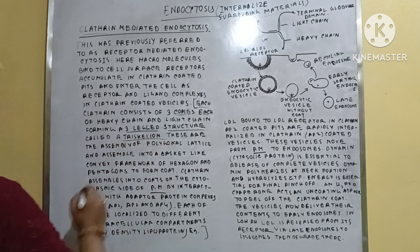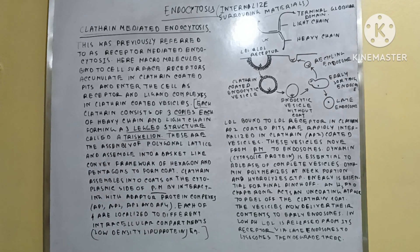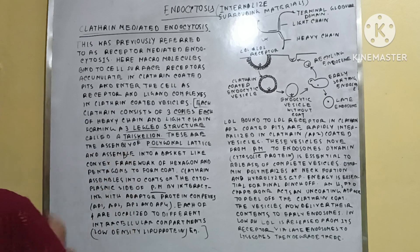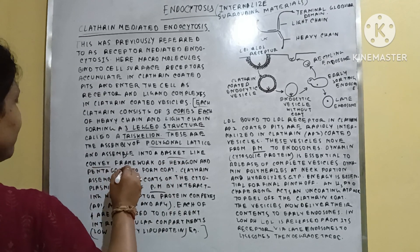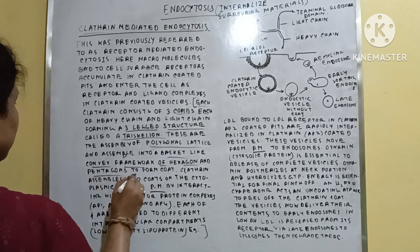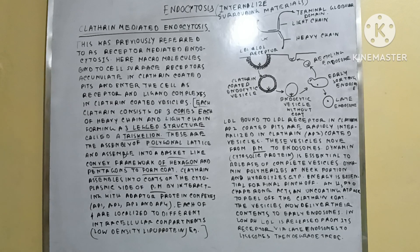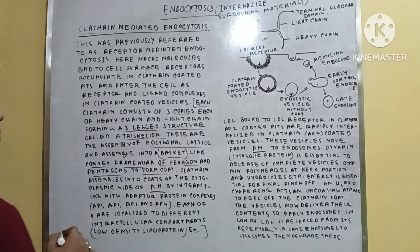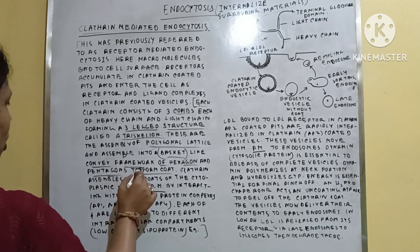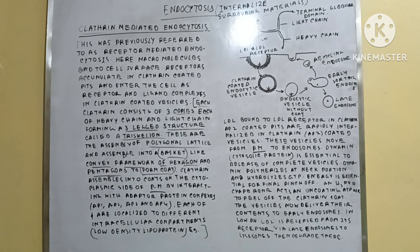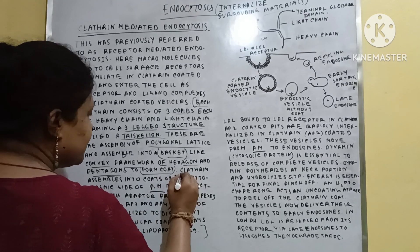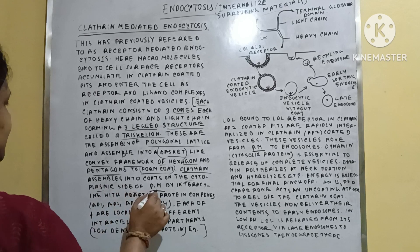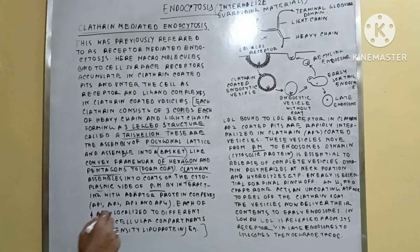Clathrin is a polygonal lattice that assembles into a basket-like convex framework of hexagons and pentagons to form a coat. This clathrin molecule remains within a coat-like structure and assembles into coats on the cytoplasmic side of the plasma membrane by interacting with adaptor proteins.